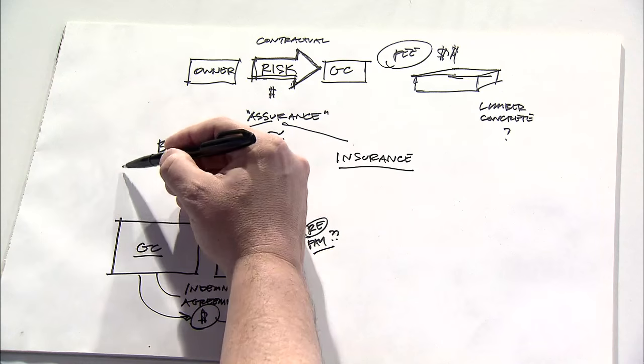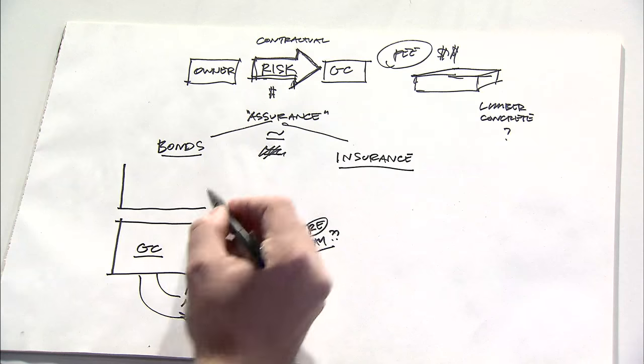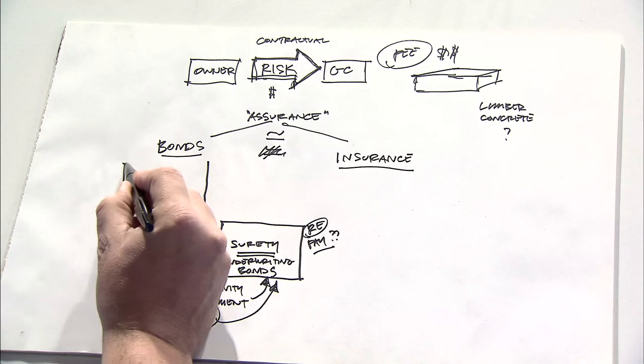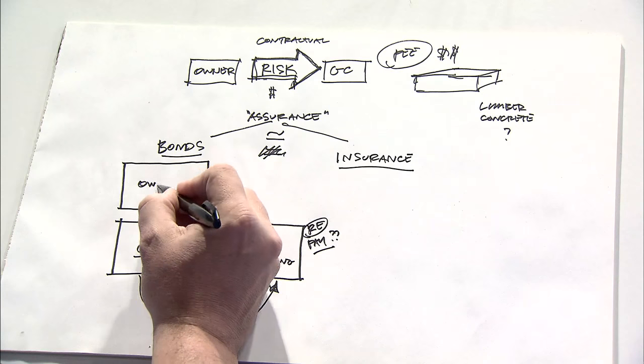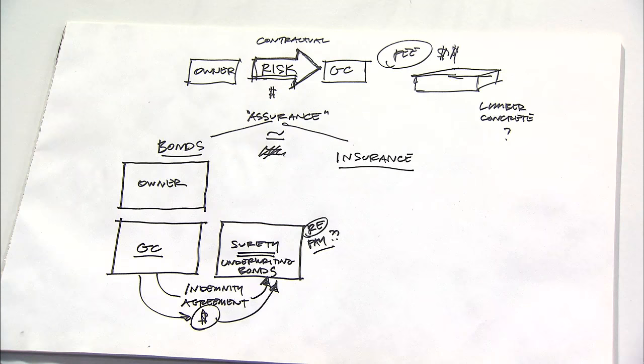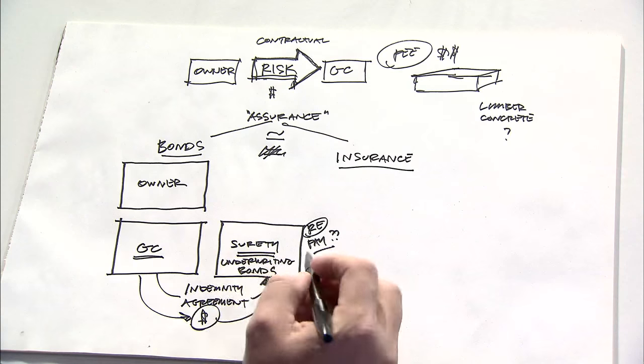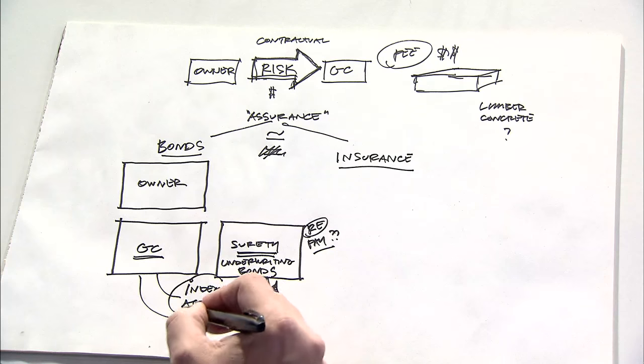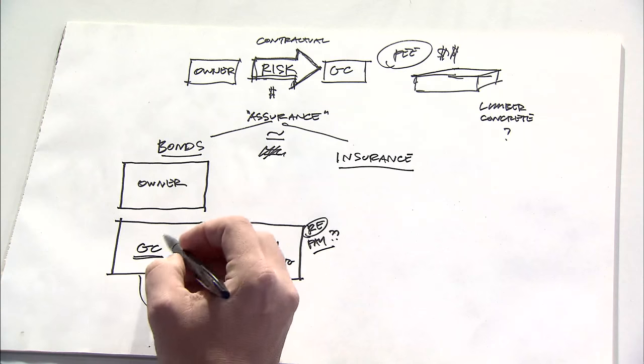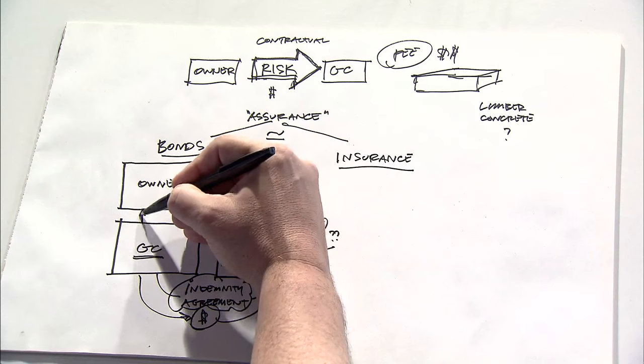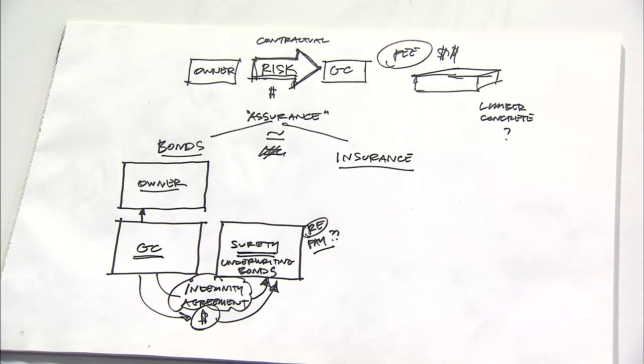So, as a three-party agreement, the third party that we're talking about is on a project basis, and that's the project owner. So, in comes a general contractor that has a relationship with a surety by way of the indemnity agreement, and the contractor says that he would like to entertain going into contract with a project owner to build a particular project.